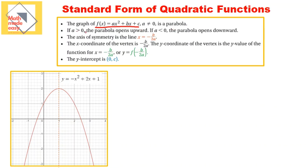If a is greater than 0, the parabola opens upwards. So if the coefficient of x squared is positive — greater than 0 — then the parabola will open upwards. If a is less than 0, the parabola opens downwards. So in one case your parabola is opening upwards, and in the other case it's opening downwards.